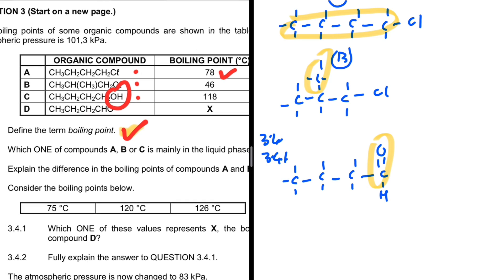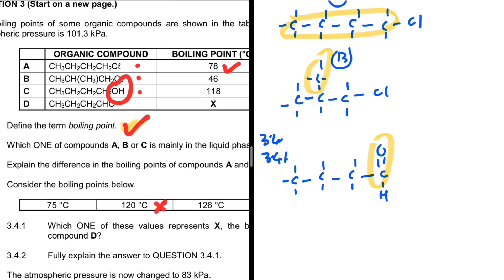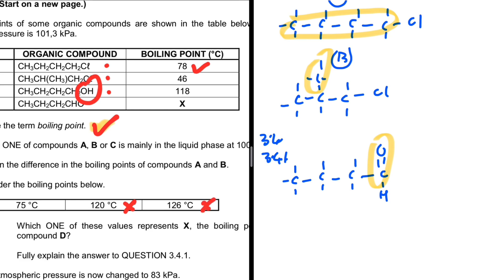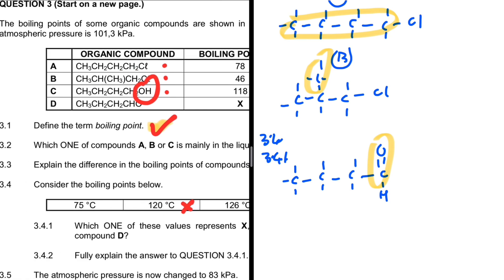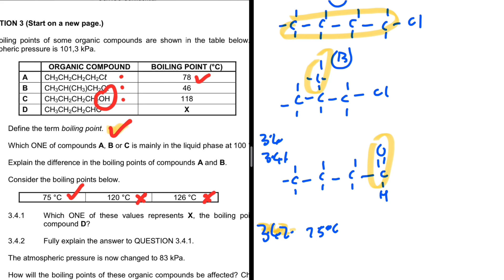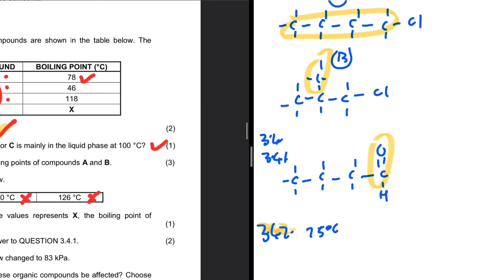So X should be less than 118 degrees Celsius. The value 120 degrees Celsius cannot be correct because D must have a lower boiling point than C. The value 126 degrees Celsius is also not correct because it cannot be higher than that of the alcohol. So the only value that makes sense is 75 degrees Celsius — X equals 75 degrees Celsius.